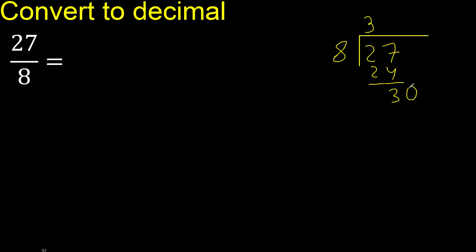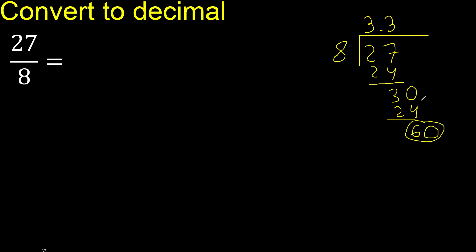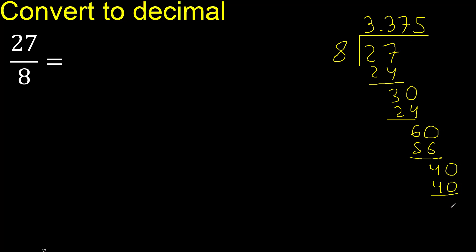Always complete with 0. Point is here. 30: 8 multiplied by 4 is greater, 8 multiplied by 3 is 24. Subtract — complete with 0. Point is here. 60: 8 multiplied by 7 is 56, not greater. Subtract — complete. 40: 8 multiplied by 5 is 40. Subtract — 0. Therefore finish. Answer: 3.375.